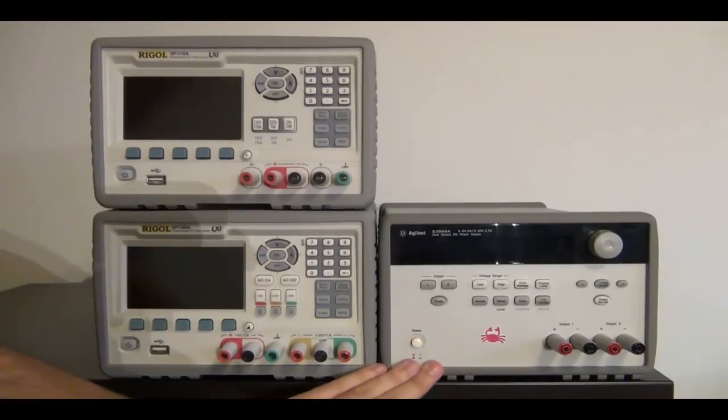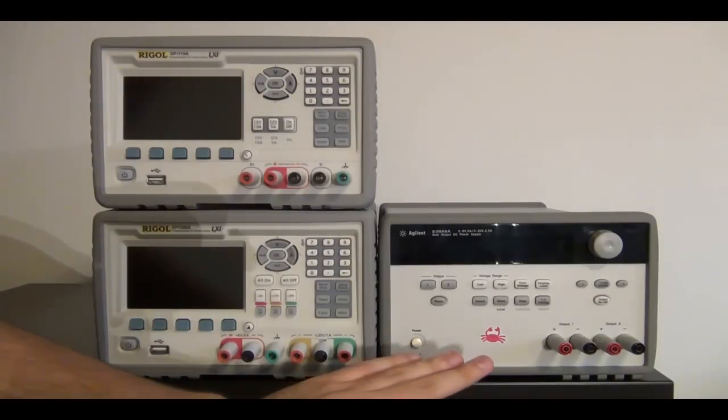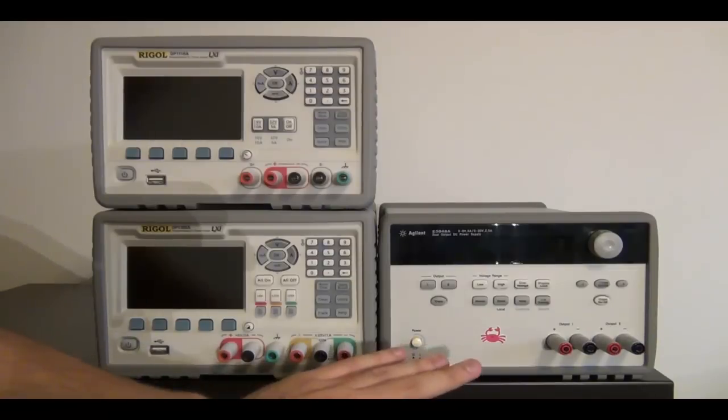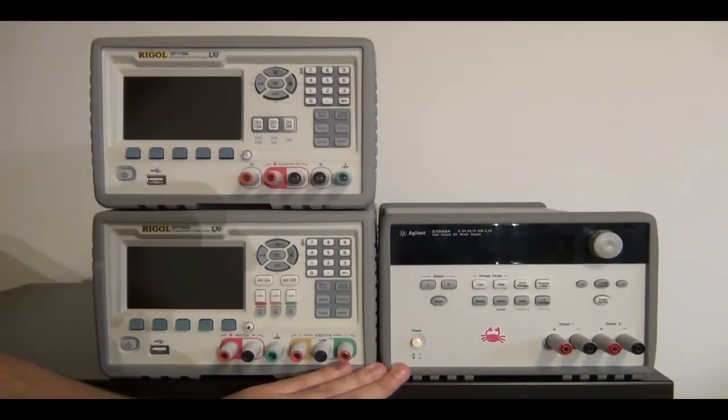I'm also comparing it here to an Agilent E3648A power supply, which can give you 5 amps up to 8 volts and 2 and a half amps up to 20 volts. So this is also a very good power supply and the industry standard. So we can now compare in terms of feature and performance and we'll do some tests.